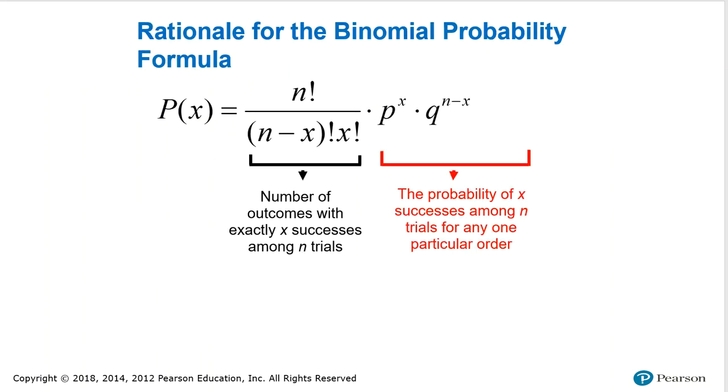The rationale for the binomial probability formula. This first part is the number of outcomes with exactly x successes among n trials. It's also known as a combination.